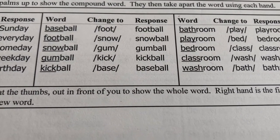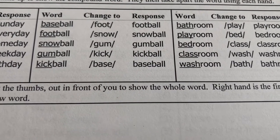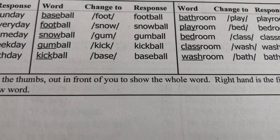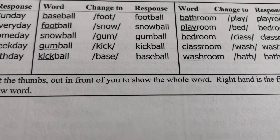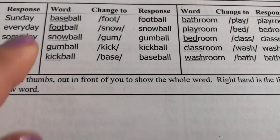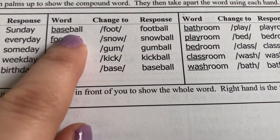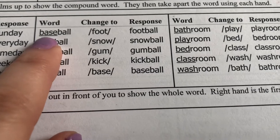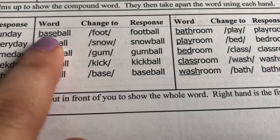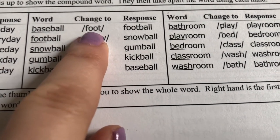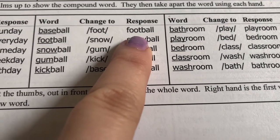Now we are substituting words. I'm going to say the word, the student would repeat the word, then I'm going to say change blank to blank and the word is. So here's my example: Baseball. We're changing base — that's the underlined word — base. Change base to foot, and the word is football.